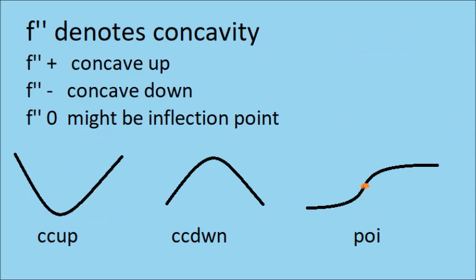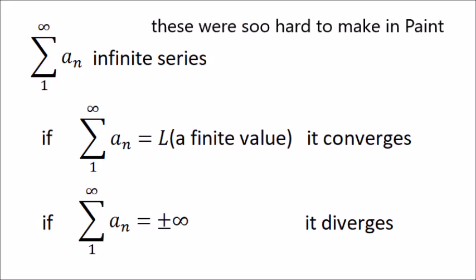The second derivative denotes concavity, and f prime prime equals 0, it might be a point of inflection. If the second derivative is positive, it's concave up. If the second derivative is negative, it's concave down.